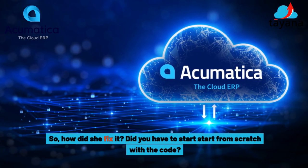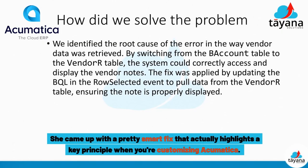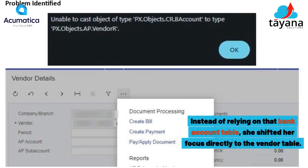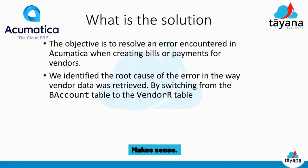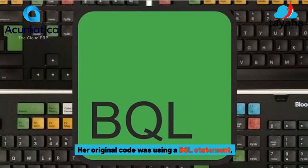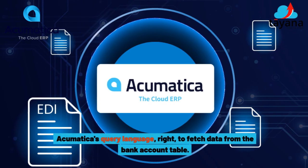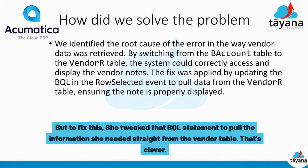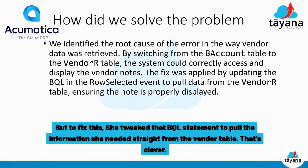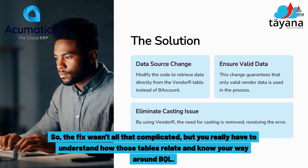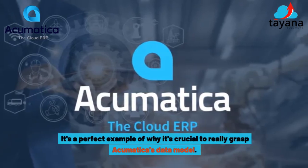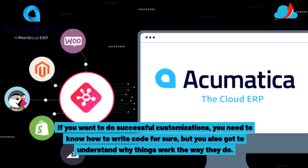She didn't have to start from scratch. She came up with a pretty smart fix that highlights a key principle when you're customizing Acumatica. Instead of relying on the bank account table, she shifted her focus directly to the vendor table. By looking at the vendor table directly, she avoided those bank account records that didn't have a vendor. Her original code was using a BQL statement — Acumatica's query language — to fetch data from the bank account table. To fix this, she tweaked that BQL statement to pull the information she needed straight from the vendor table. The fix wasn't all that complicated, but you really have to understand how those tables relate and know your way around BQL.